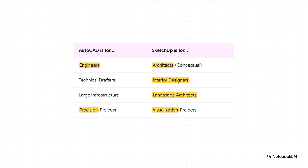So who should use what? Honestly, the breakdown is pretty clear. AutoCAD is the go-to tool for engineers, technical drafters, and construction professionals — basically anyone whose work demands absolute, verifiable precision. SketchUp is the ideal choice for conceptual architects, interior designers, and landscape architects. If your main goal is speed and visualization, SketchUp is your friend.